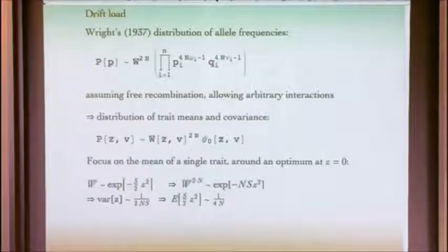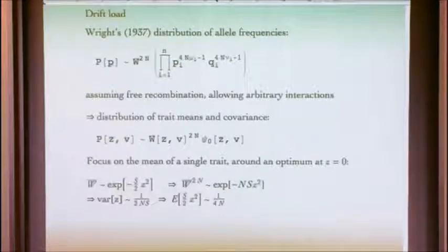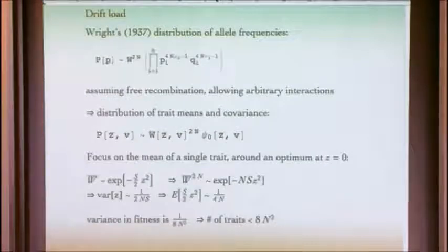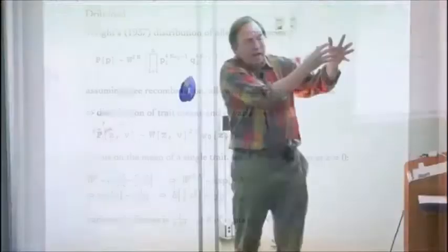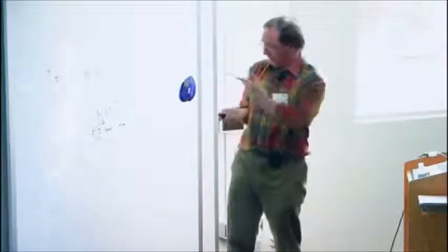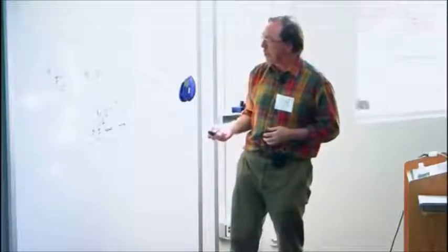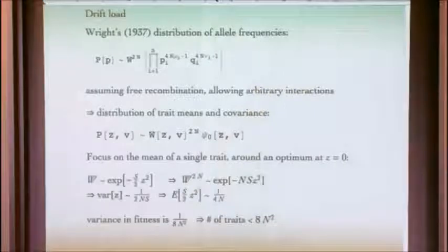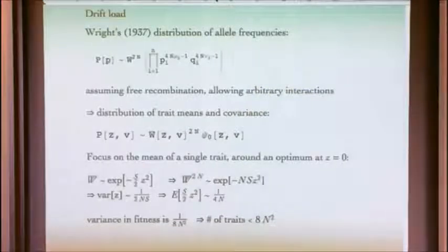Crucially, this applies whatever the pattern, the relationship between fitness and genotype. We can have arbitrary epistasis. So this is one of the very few results that is kind of independent of the genotype-phenotype relationship. We can go further and say, if selection is acting on a set of traits, some very large number of traits which are distributed, let's say they're normally distributed, we just average over the allele frequencies conditional on those traits, and we find that we have now the distribution of the mean and the variance, or the mean and the covariance of a set of traits, is again a product of the distribution they would have under neutrality times the effect of selection on those traits. If we focus on the mean of a single trait and look at the distribution of that trait around some optimum at zero, you find that the mean fitness is reduced by 1 over 4n.